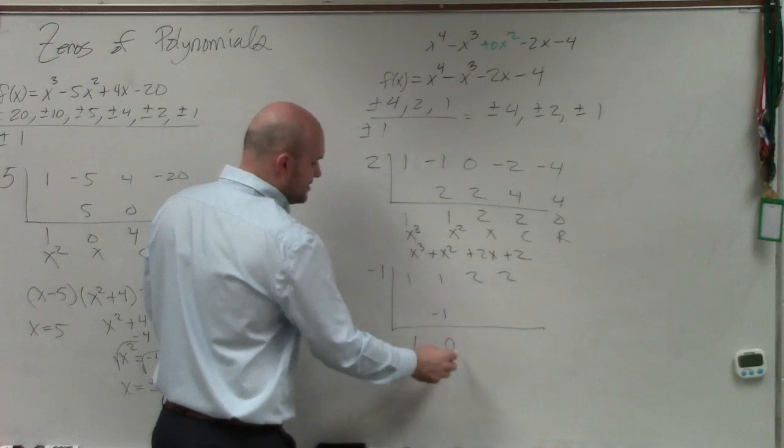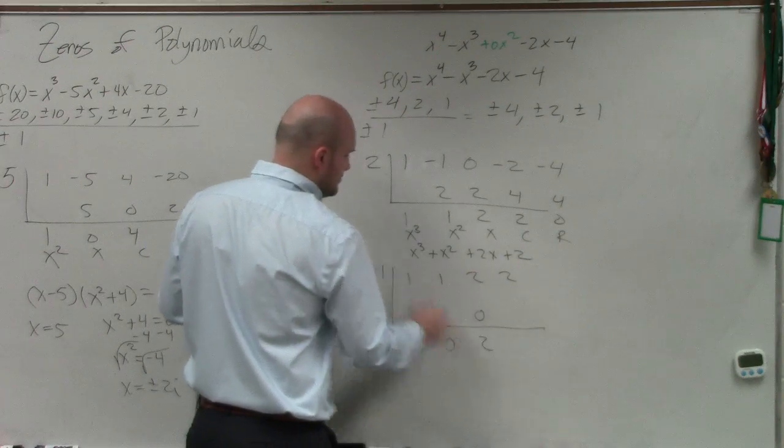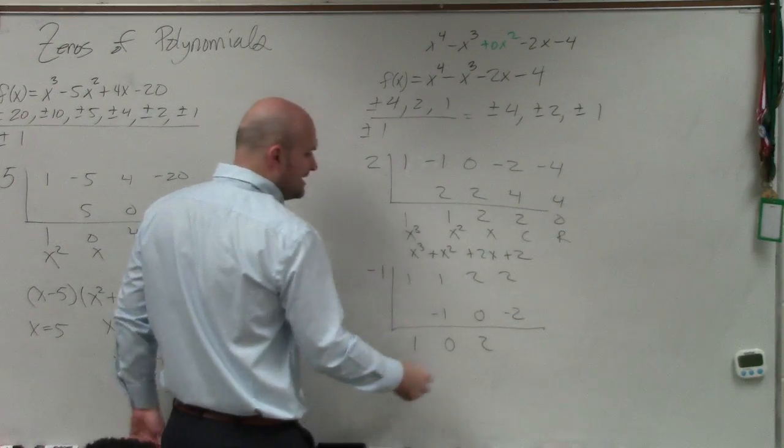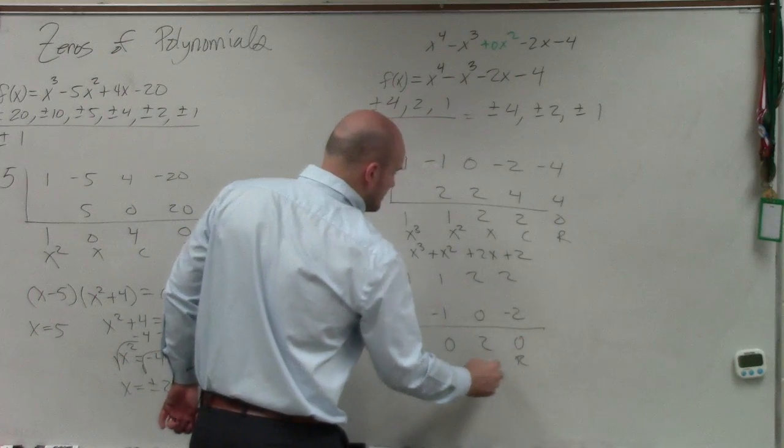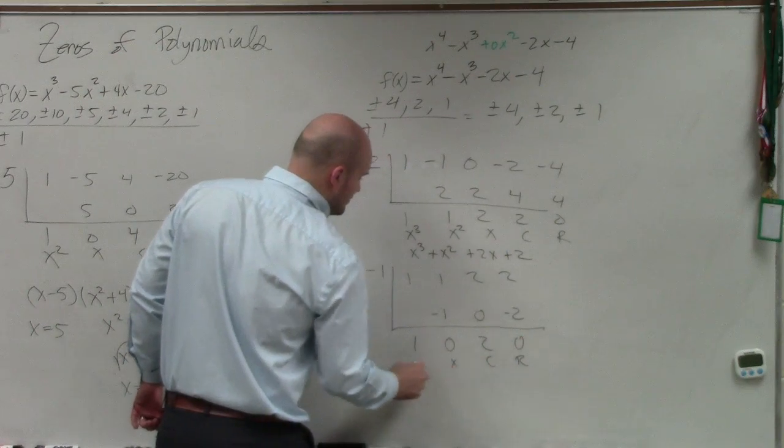1, negative 1, 0, 0, 2, negative 2. I now get constant, linear, quadratic. All right.